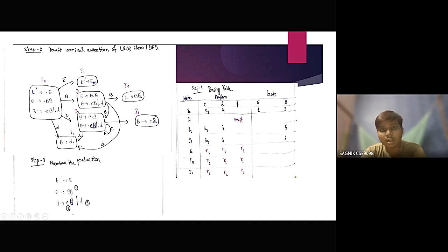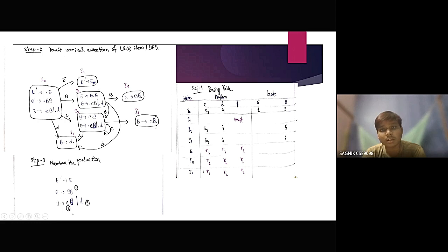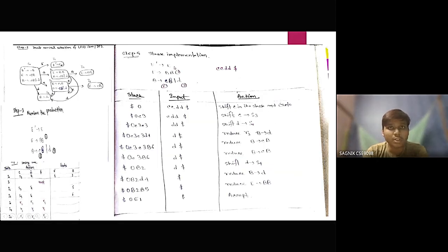For the I6 state, it is also a final state, so there is no output going. It is reduced by rule number 2: for C, it is rule number 2; for D, also rule number 2; and dollar is also rule number 2. So here are our production rules: E' produces E, E produces BB (first), B produces CB (second), and D (third).